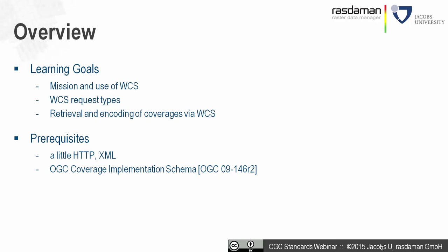What we will learn today is: what is the mission and use of WCS? What is it good for? What are the specific request types that WCS offers? And how does retrieval and encoding of coverages work in WCS? What you need to bring along is a little bit of knowledge about HTTP and some XML, and in particular about the OGC coverage implementation schema — what is an OGC coverage? If you feel insecure about the latter, you may want to rewind and go to the webinar we have done about coverages.